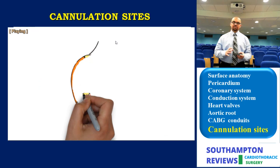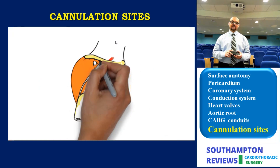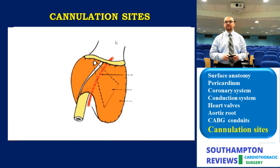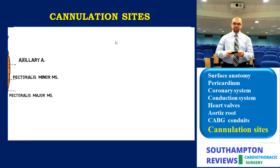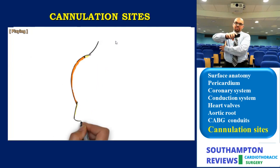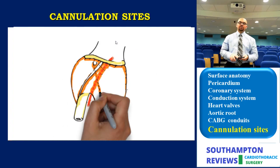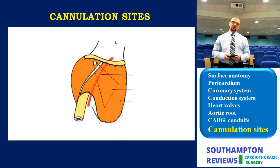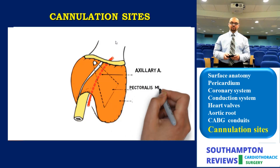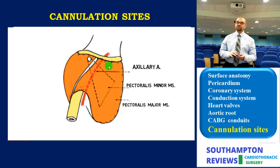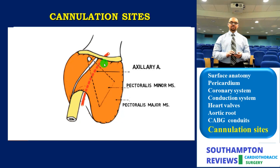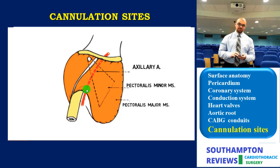Next is axillary cannulation. Orienting ourselves to the area: the axillary region is essentially a pyramid — the armpit. The base is the armpit region and the apex travels up to the inlet of the chest. The axillary artery travels obliquely from top to bottom and is divided into three parts by the pectoralis minor. In the first part, the axillary artery lies directly under pectoralis major and the clavipectoral fascia; in the second part, under both pectoralis major and minor; and in part of the third part, it is covered only by pectoralis major.